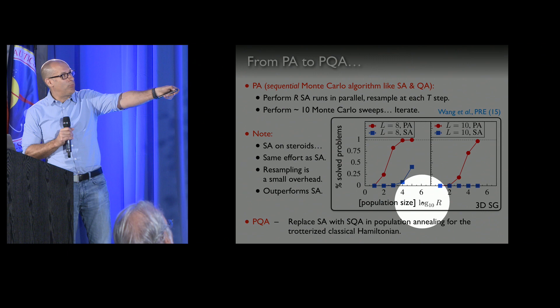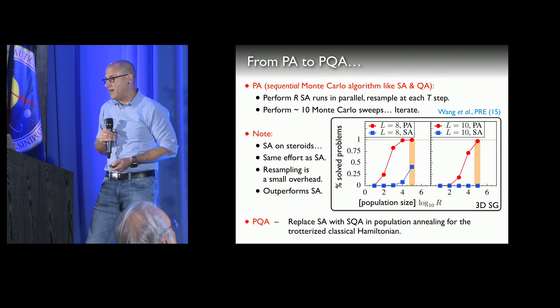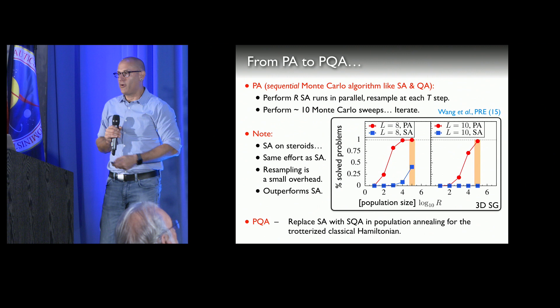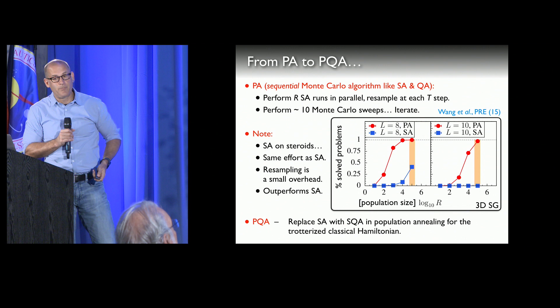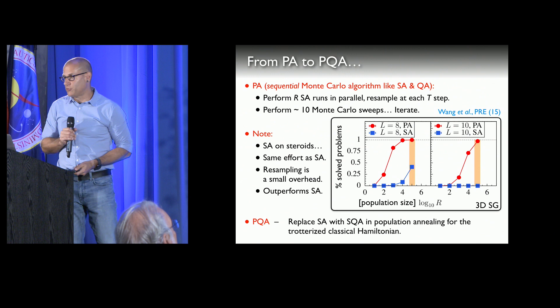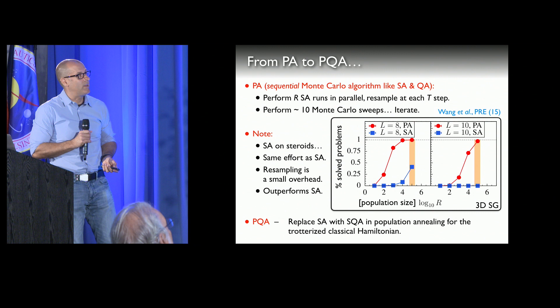Let me show you how well this performs. Here is the fraction of solved problems versus population size in log10, for a problem of roughly 512 variables in 3D and a problem of 1000 variables. If I focus on a population of 10^5 simulated annealing runs — performed consecutively with all identical parameters except that one has resampling and the other does not — success probabilities are boosted from roughly 30 percent to about 100 percent. For 1000 variables, we were finding almost no solutions, but once you add resampling, you can solve almost all of them.